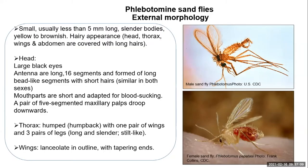The head contains large black eyes and long antennae with bead-like segments and short hairs, similar in both sexes — so we cannot differentiate male from female using the antenna as we can with mosquitoes. We differentiate through the tip of the abdomen: in the male there is a claw-like structure known as claspers, while in the female the tip of the abdomen is rounded.